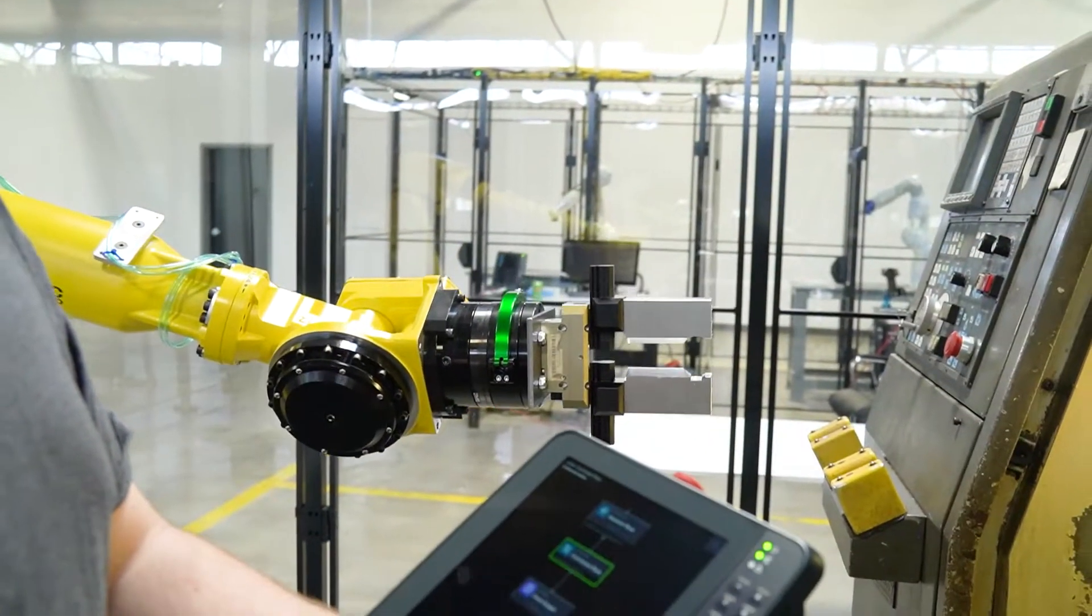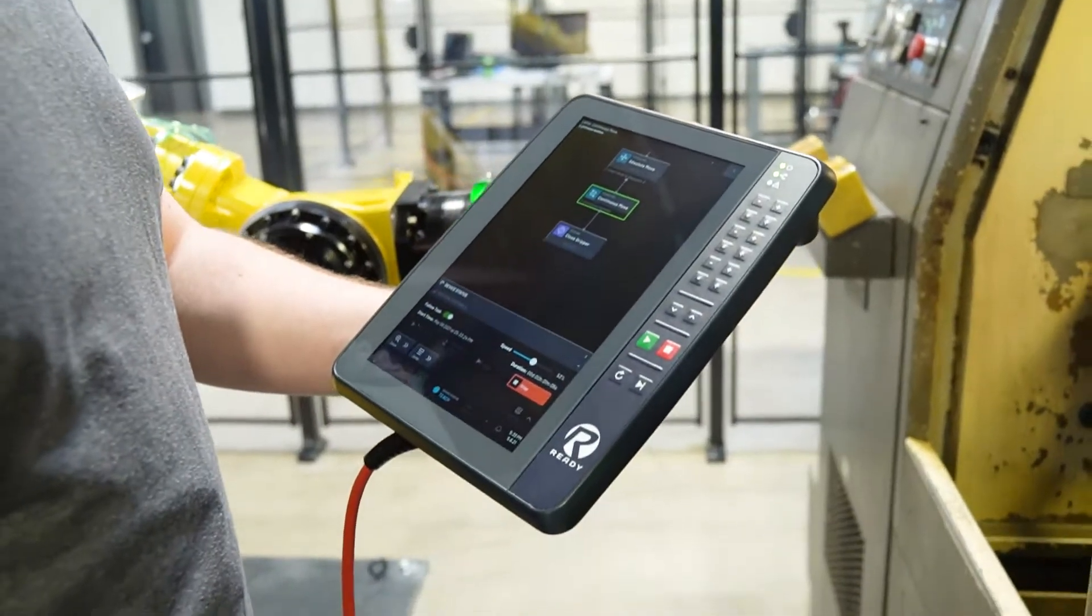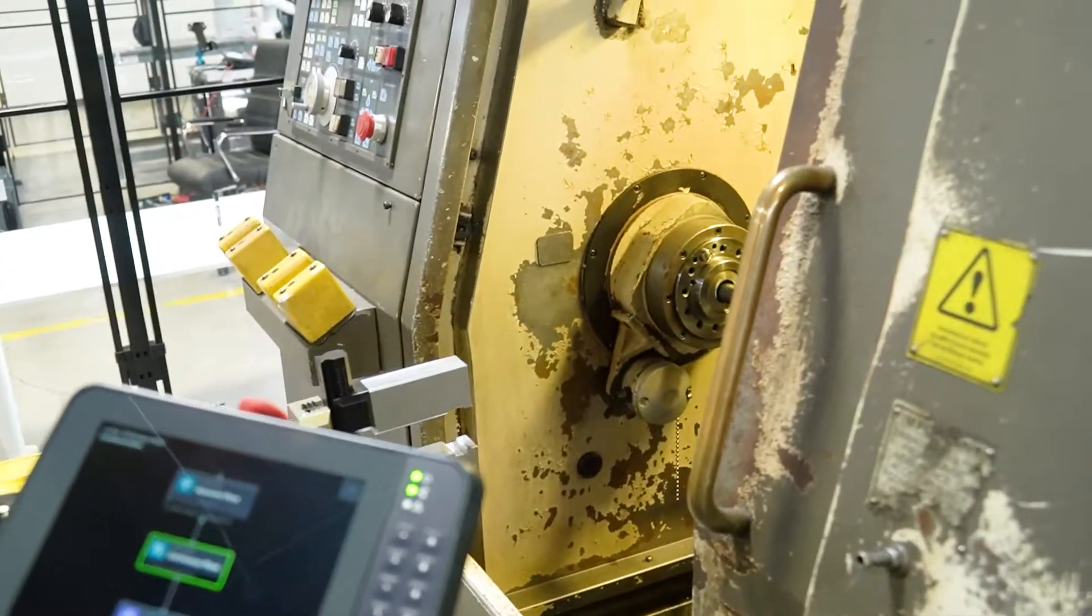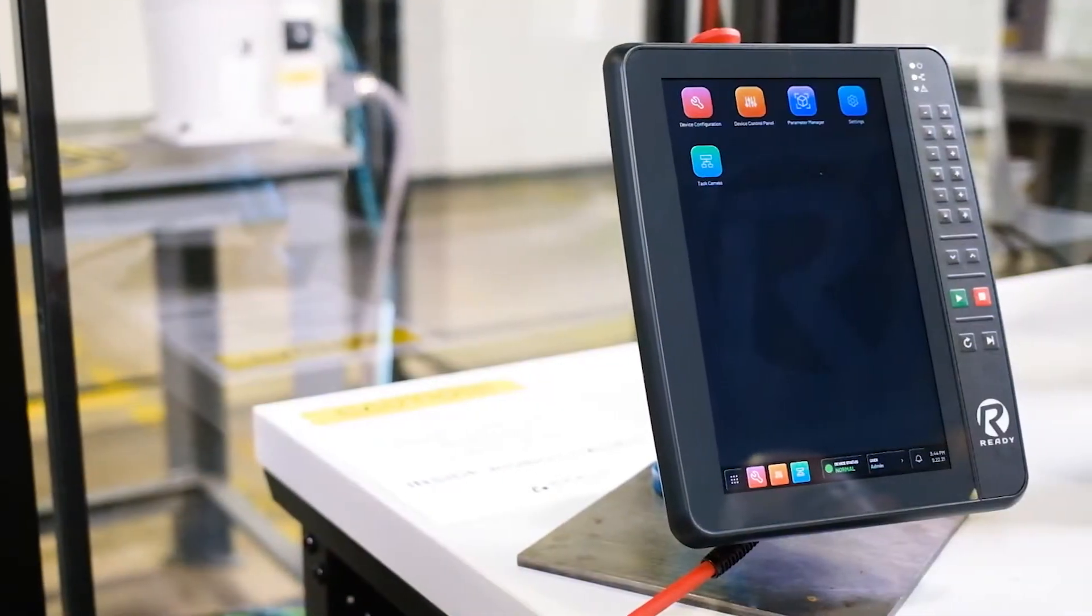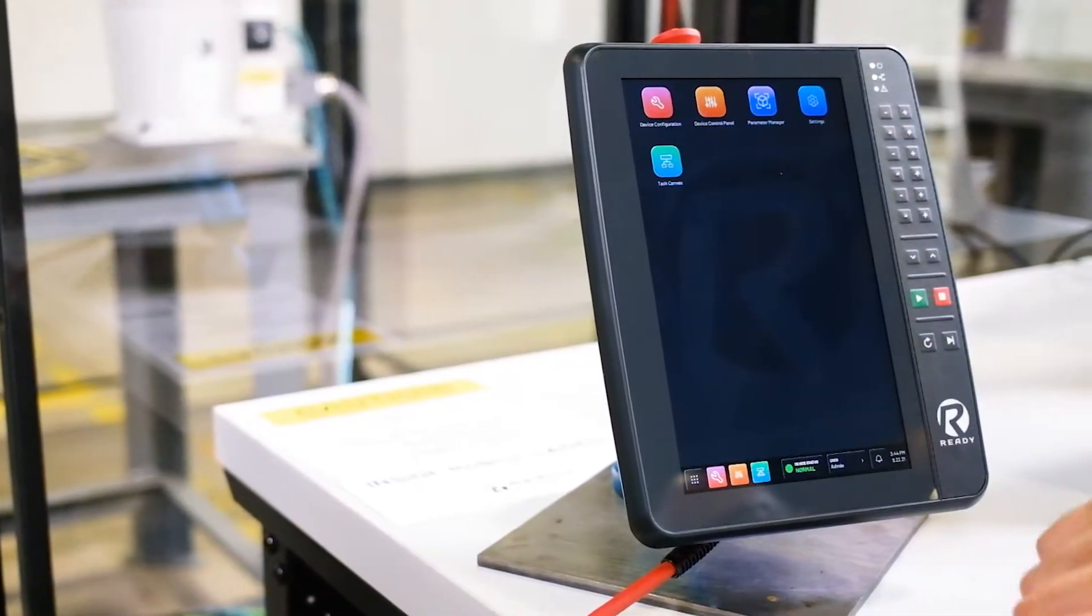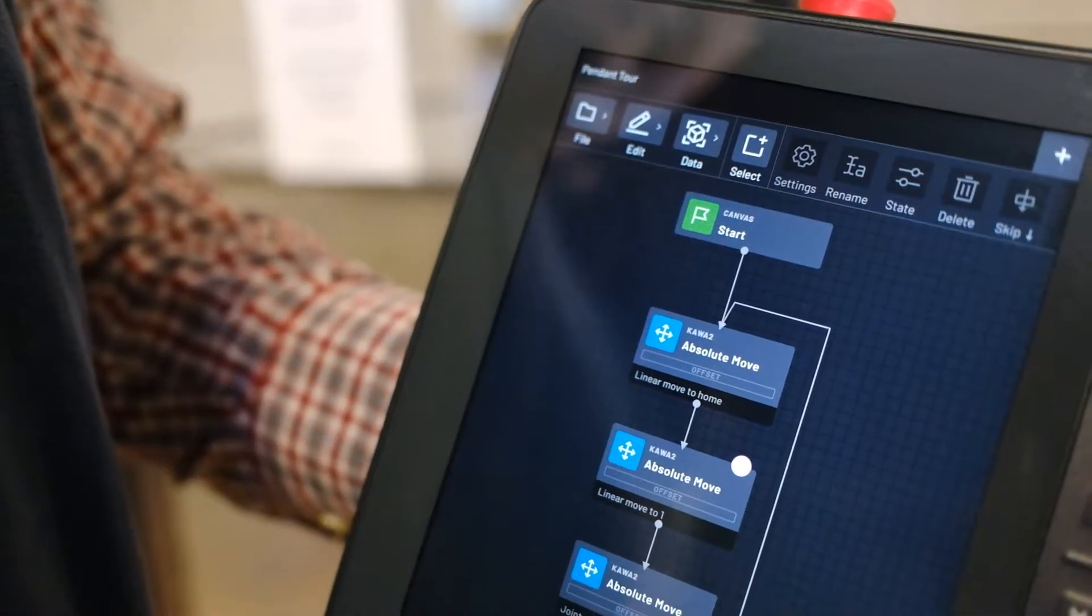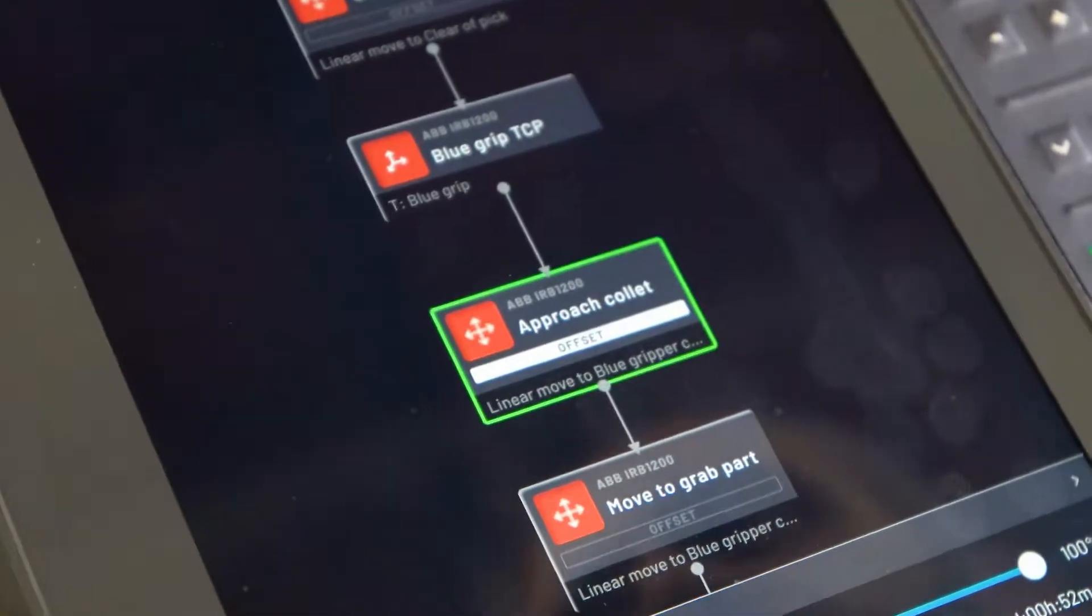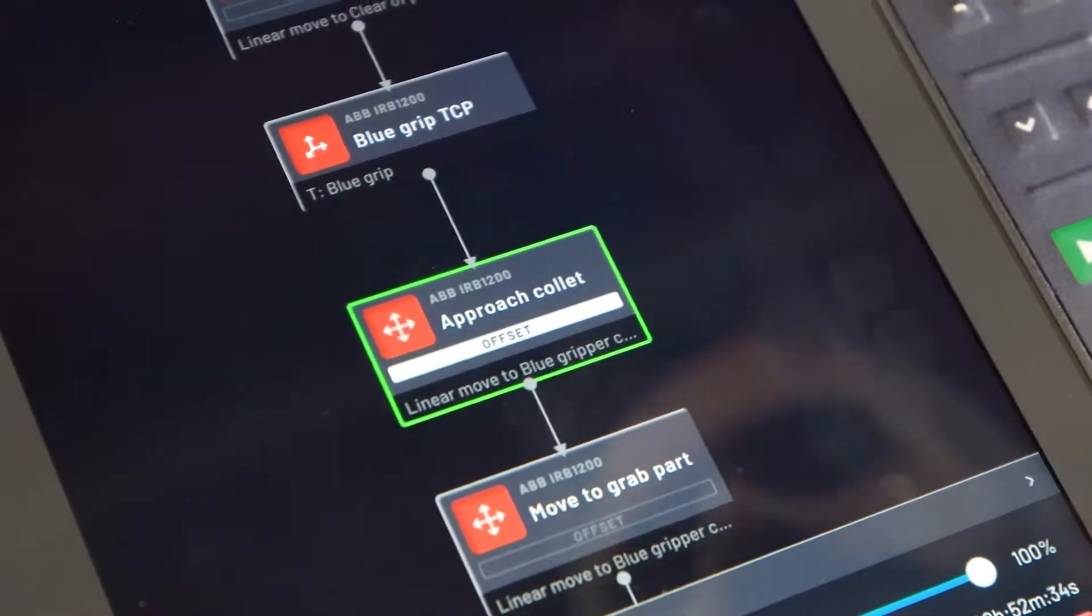Forge is designed to control the entire work cell, giving you the ability to configure and control devices through the Teach Pendant. Forge has apps as well, a lot like your smartphone. Apps like Task Canvas, the conversational flowchart-based programming interface that allows anyone to program automation with easy-to-follow building blocks.